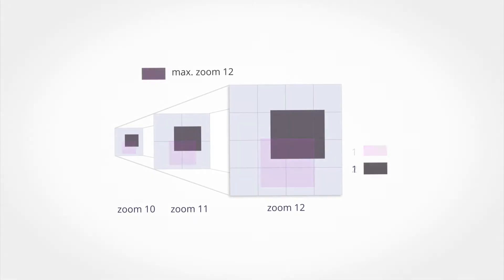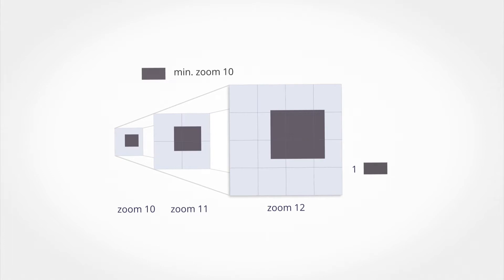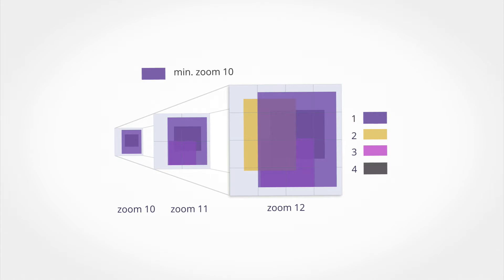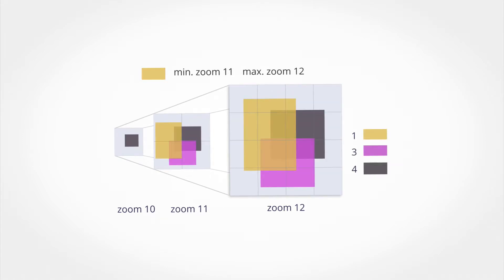Hello. This tutorial will show you how to order different maps in different zoom levels. This can be useful if we want to combine several data sources from different scales and of different spatial extents. It's easy in MapTiler Desktop Pro with the File Based Zoom Levels function.